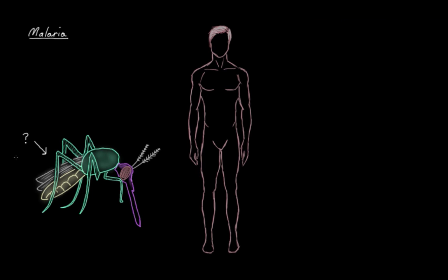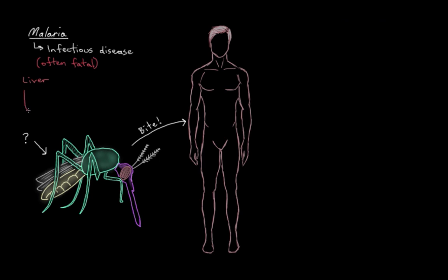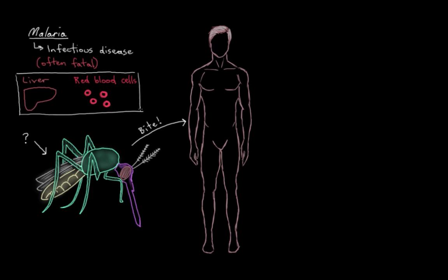The mosquito here is actually pretty important. Malaria is a disease — an infectious and often fatal disease that is transmitted to humans and other animals as well, not just humans — but it's transmitted most often by us being bitten by an infected mosquito. Interestingly, malaria is primarily a disease of the liver and of the red blood cells, and this kind of explains some of the symptoms that we see in malaria.